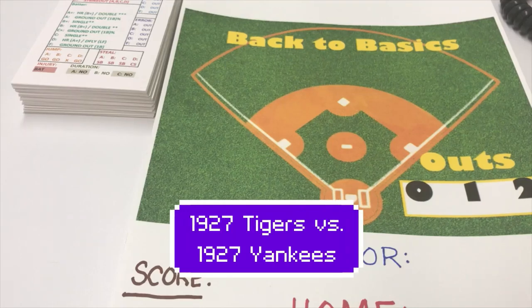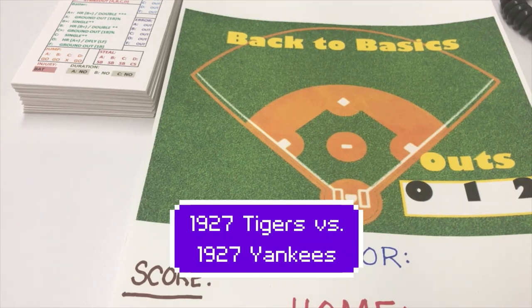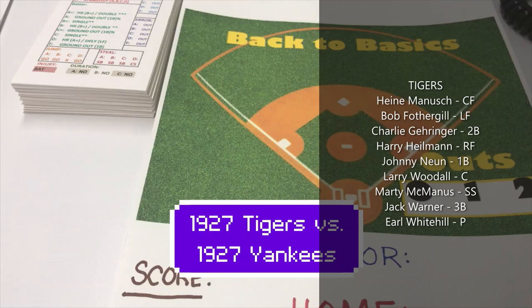Hello sports fans and baseball fans. It's me, Sportsman Zee, Bob Zolke. Today I'm here with another back-to-basics baseball game. This game will be between the 1927 Detroit Tigers and the 1927 New York Yankees. The Yankees won 110 games in 1927 and the Tigers won 82.